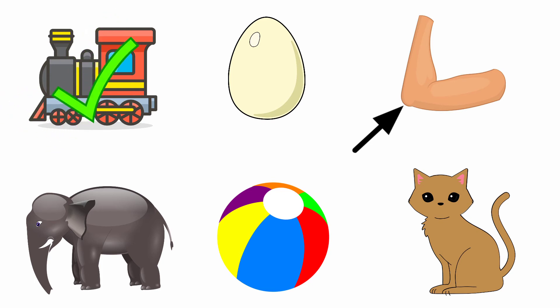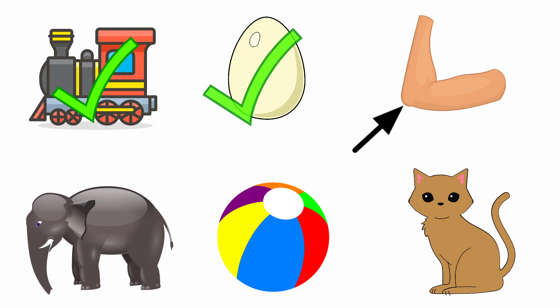Next one — egg. The sound of the letter E is 'eh', and the beginning sound of the picture 'egg' is 'eh'. Both are same sounds. So we are going to tick the picture egg.